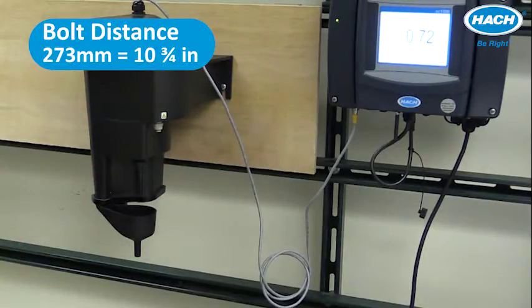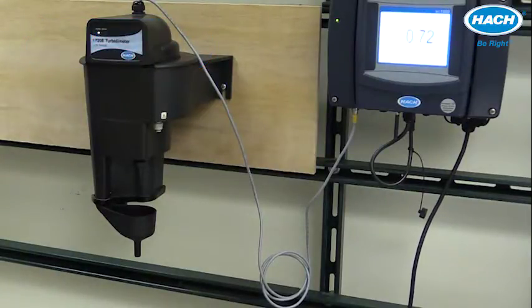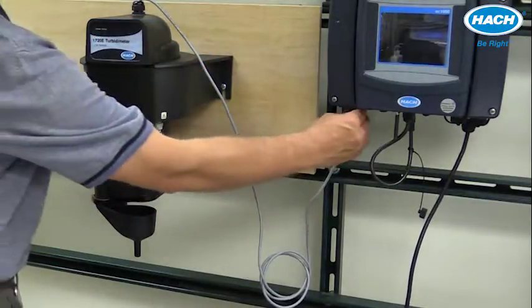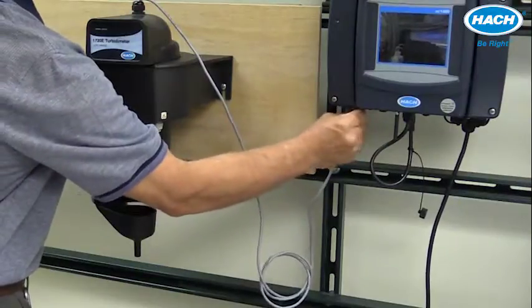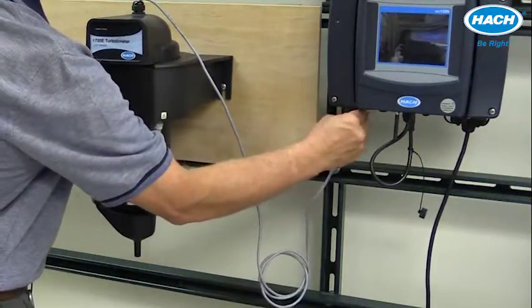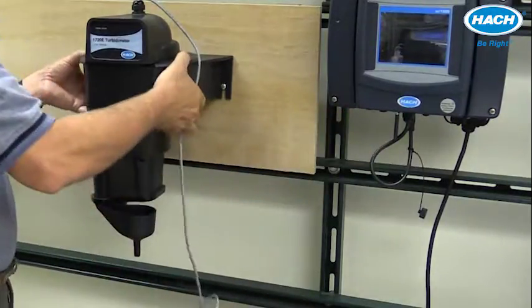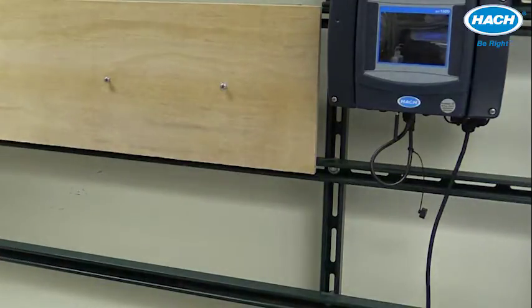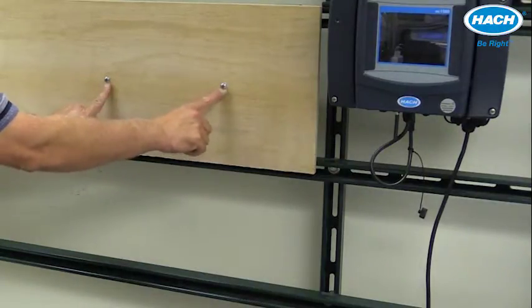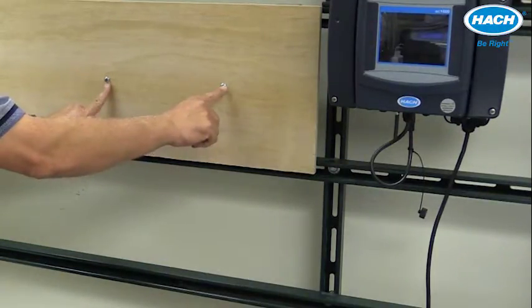To start the process, turn off power and disconnect the existing instrumentation from the controller. If you're not replacing an existing instrument, simply mount two bolts 10 and 3/4 inches apart and make sure that they're level.